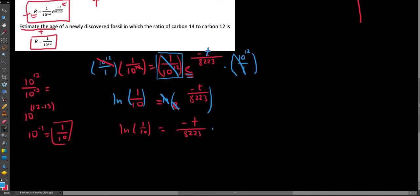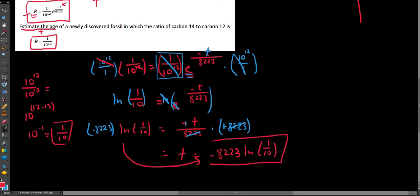So the only thing we have remaining to do here is multiply by 8223. And I'm going to go ahead and multiply by a negative 8223 to kind of kill two birds with one stone, because we're trying to get t by itself. If I multiply by 8223, I'd still have to take care of this negative. But by multiplying by a negative 8223, we can go ahead and say that we've isolated t. And so we're going to say that t is equal to, put this over here, negative 8223 ln of a tenth. And this is our exact value in years. What we're going to want to do is get a decimal approximation for this.